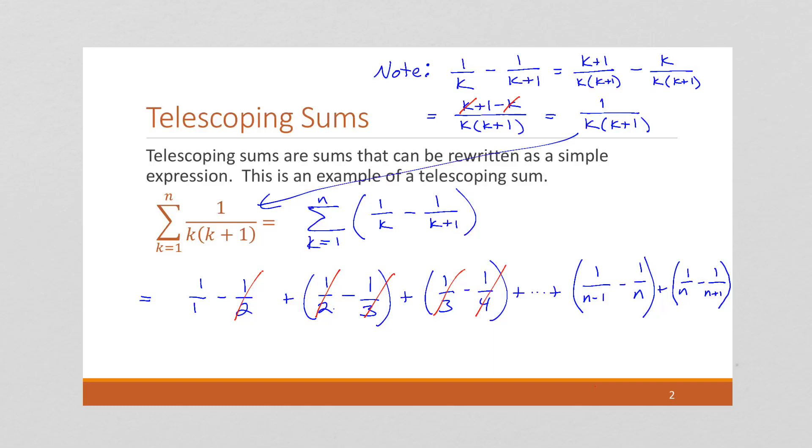Here we have a negative 1 over n plus 1 over n. And what we're left with when we're done is 1 minus 1 over n plus 1.